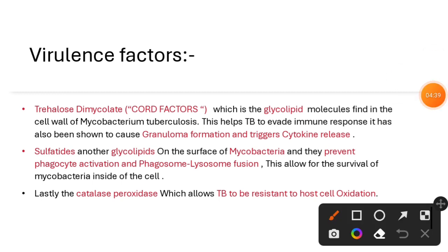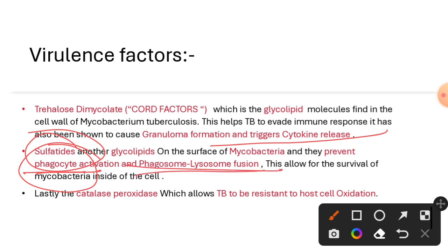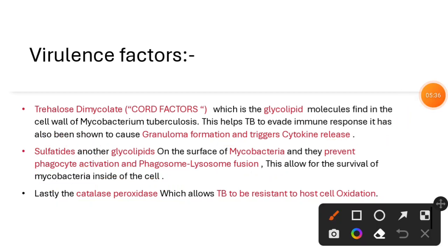To summarize the three important virulence factors: first, trehalose dimycolate or cord factor, a glycolipid component found in the cell wall of Mycobacterium tuberculosis, which helps evade immune response, causes granuloma formation, and triggers cytokine release. Second, sulfatides, a glycolipid on the cell surface, which prevents phagocyte activation and phagosome-lysosome fusion, allowing mycobacteria to survive inside the cell. Lastly, catalase-peroxidase, which allows TB to resist host cell oxidation.